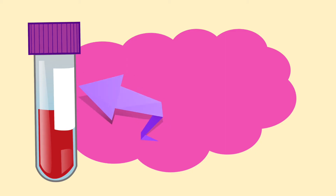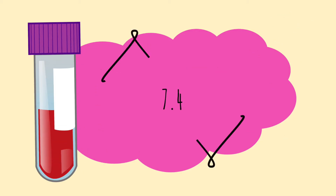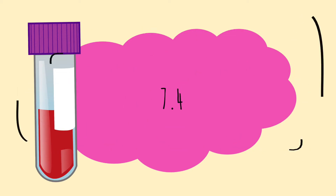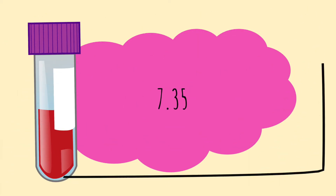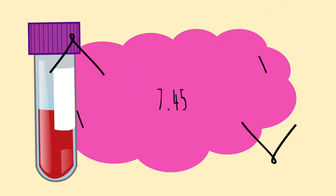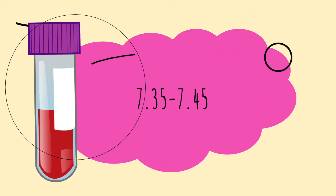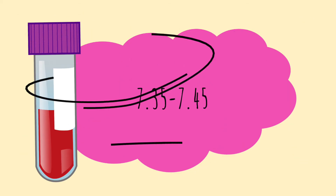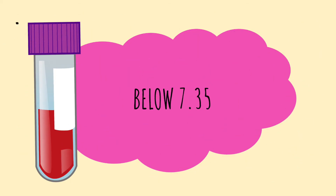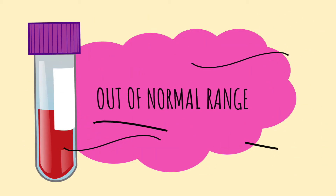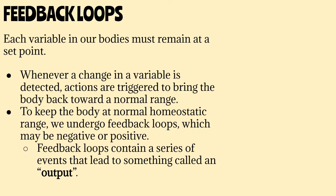One example is our blood's pH level. The blood usually maintains a pH level of 7.4. This doesn't necessarily mean that the blood will always be at 7.4 exactly, but our blood may maintain a pH close to this value, usually around 7.35 to 7.45. If the blood pH stays within these values, it may not be a set point of 7.4, but it's okay because these values are still within normal homeostatic range. However, if the blood goes below or beyond these values, this could mean that the blood's pH level is out of normal range. So all of these variables in the body are closely watched and controlled so that they may stay at a normal range or value.